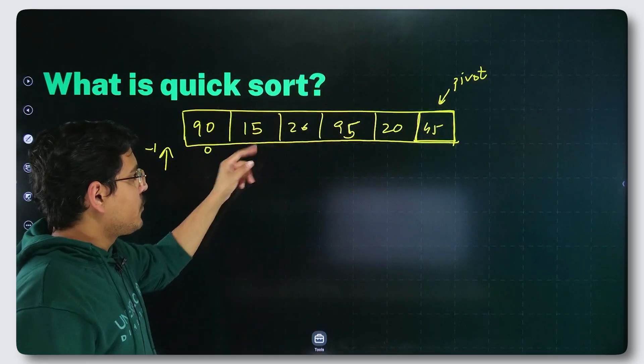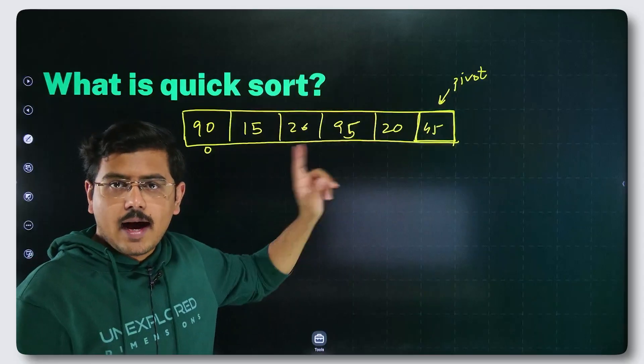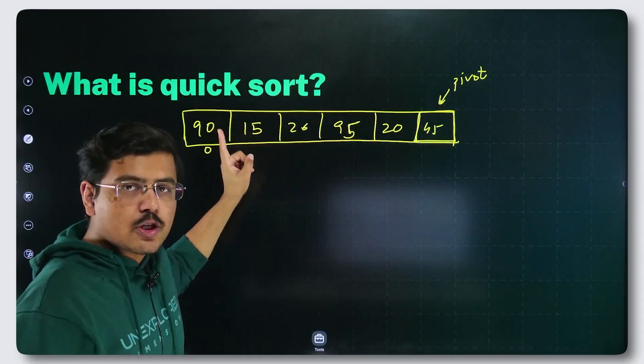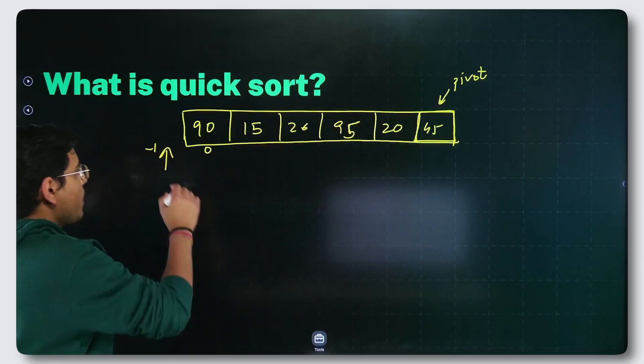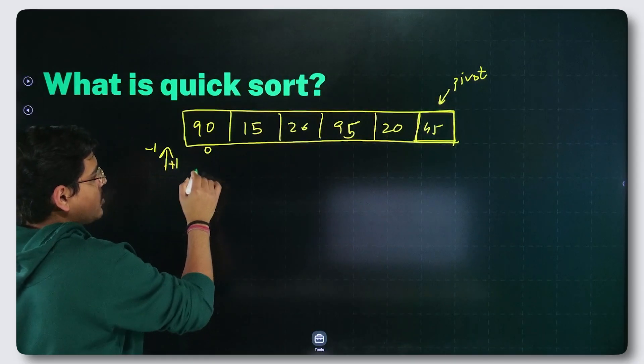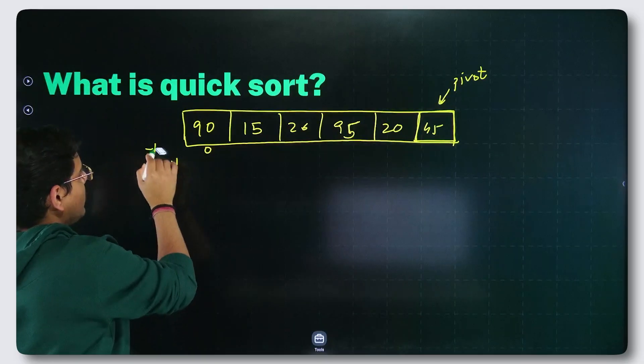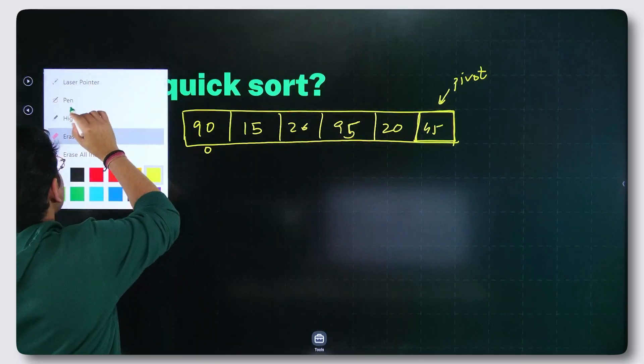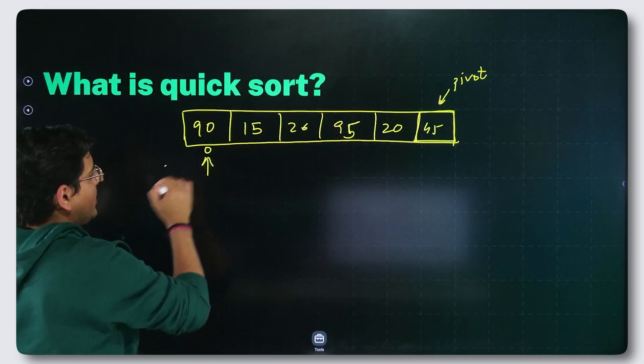Now go further. You see 15. 15 is smaller than 45. I told you as soon as you see a smaller element, you increment this pointer. So I increment this pointer, I do plus one. What will happen? This pointer will start pointing here.